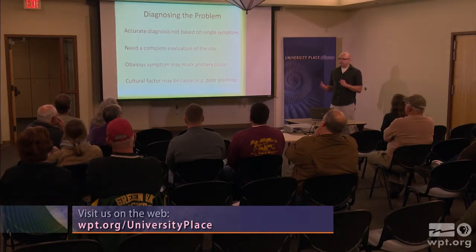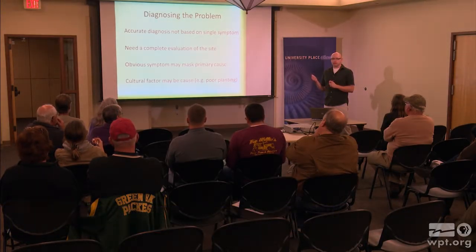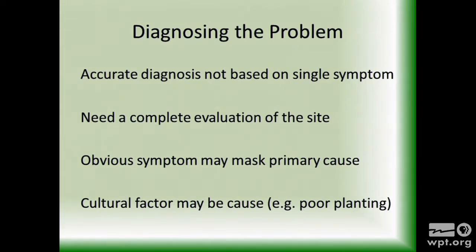One big thing to consider is that you need to look beyond just one symptom, because that might not be the sole source of what's going on. You might see leaves wilting, but it might not be a leaf disease — it might be something going on with the roots. Maybe some big machinery on your property killed the roots and that's what's killing the tree, even though it looks like something's eating the leaves. You have to think about your site as a whole and what's been going on over the past few years. Improperly planted trees can kill a tree just as fast as a deer eating it.